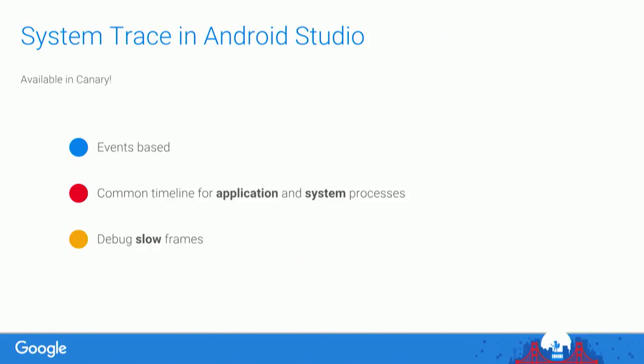Back to system trace. System trace is a tool that is events-based — so it doesn't sample like a native profiler. It's based on events that are fired from the system. It records all these events and then shows them in a common timeline, where you can see both the application and the system process. And it lets you debug slow frames very easily, because it highlights them — if a frame is taking more than 33 milliseconds to run, the UI will show you.